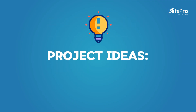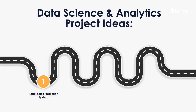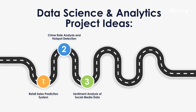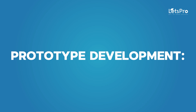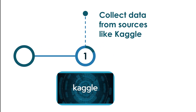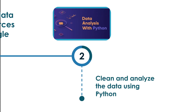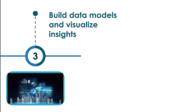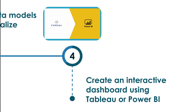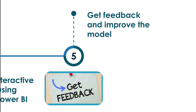Project ideas: Retail Sales Prediction System, Crime Rate Analysis and Hotspot Detection, Sentiment Analysis of Social Media Data, Customer Churn Prediction for Telecom Companies, and Personalized Movie Recommendation System. For prototype development: collect data from sources like Kaggle, clean and analyze the data using Python, build data models and visualize insights, create an interactive dashboard using Tableau or Power BI, and get feedback to improve the model.